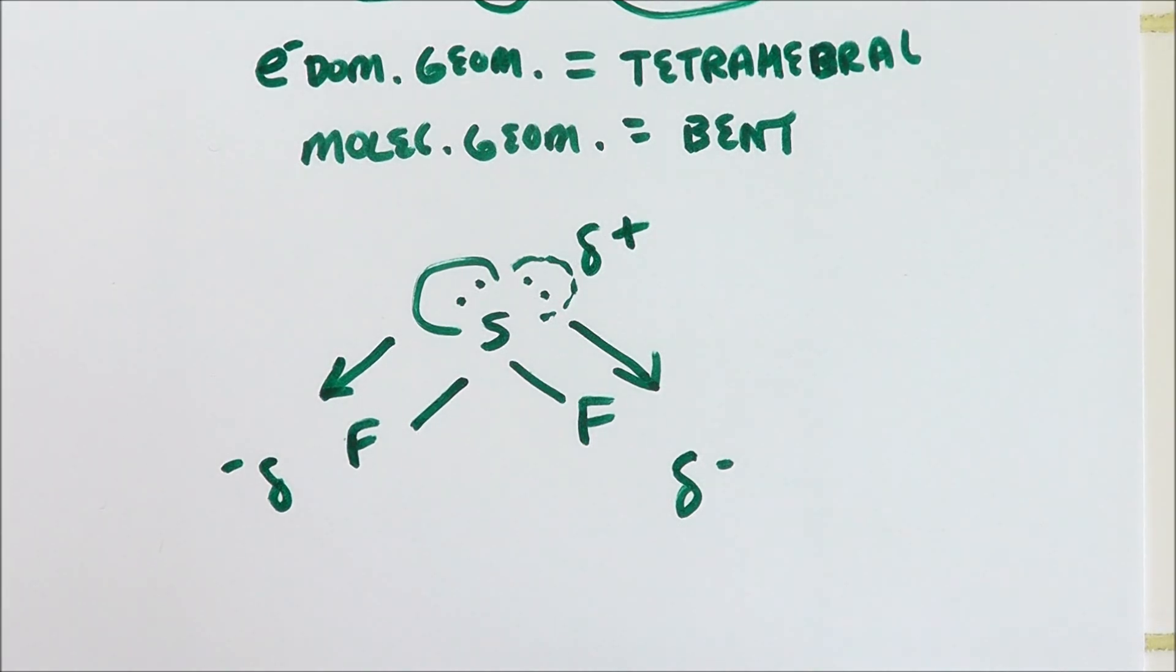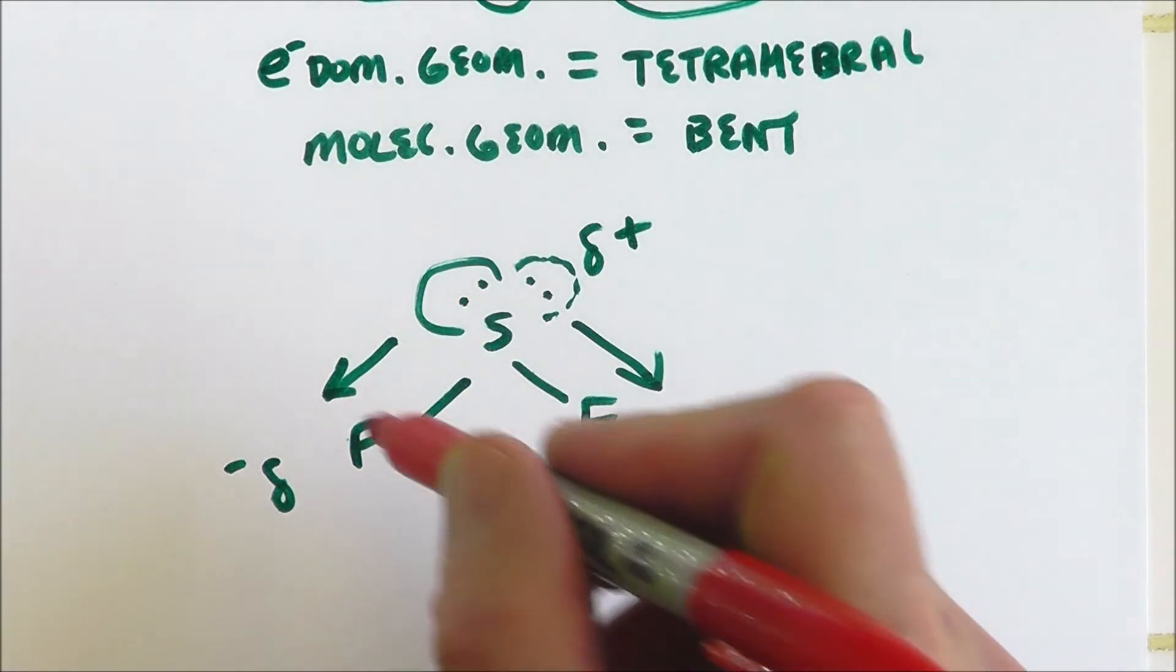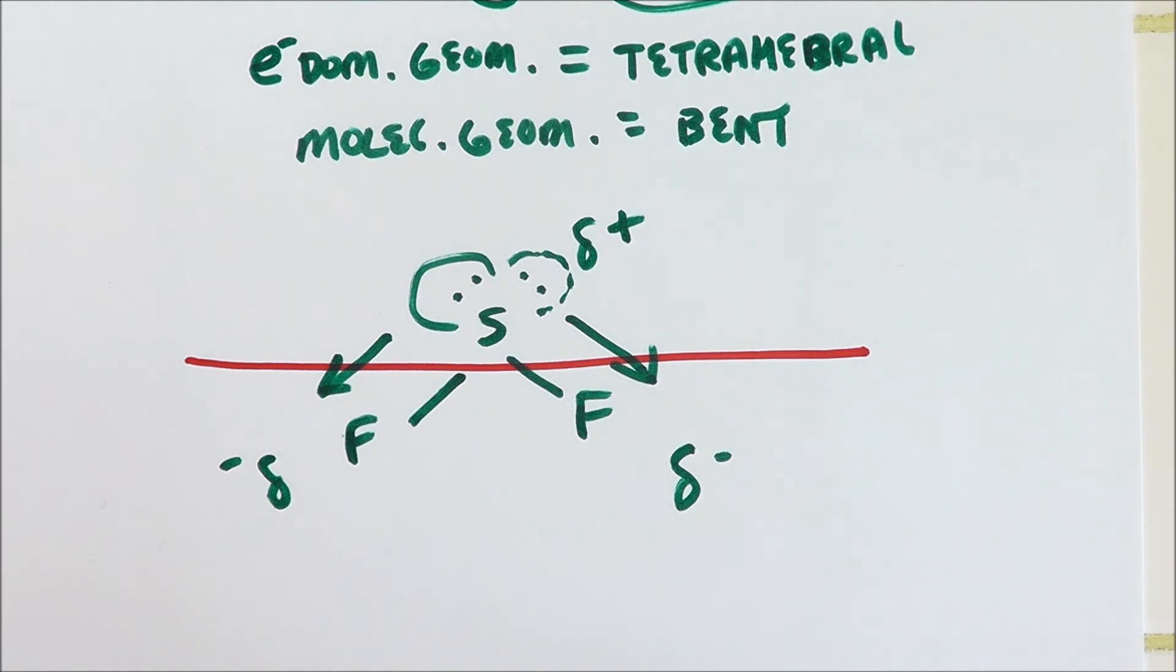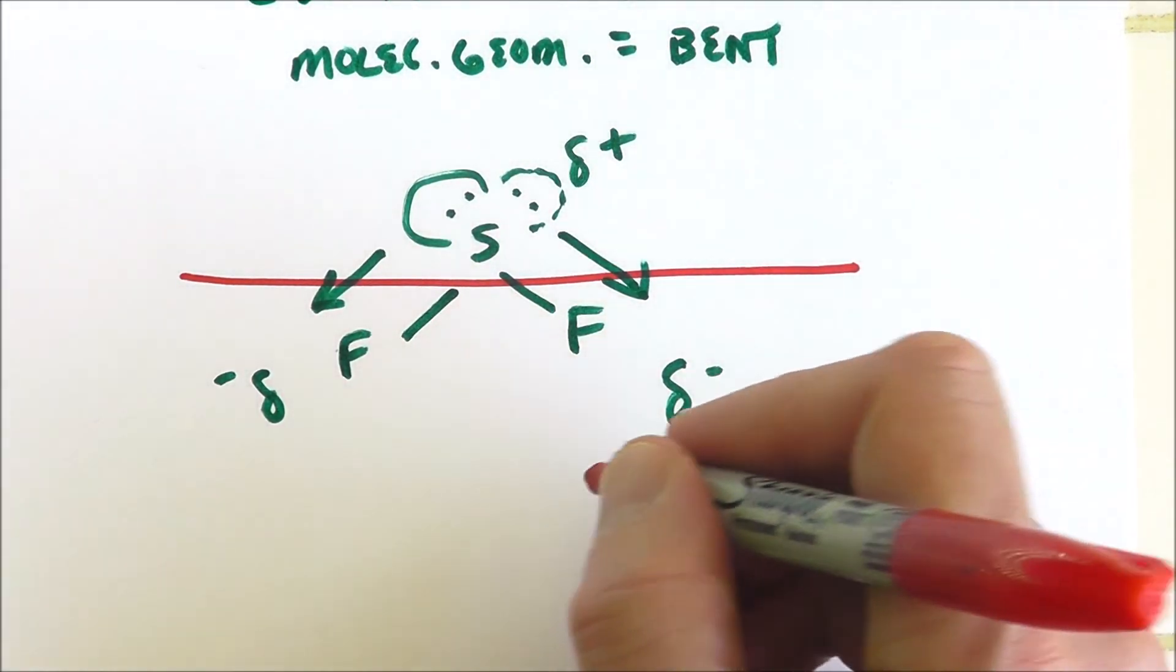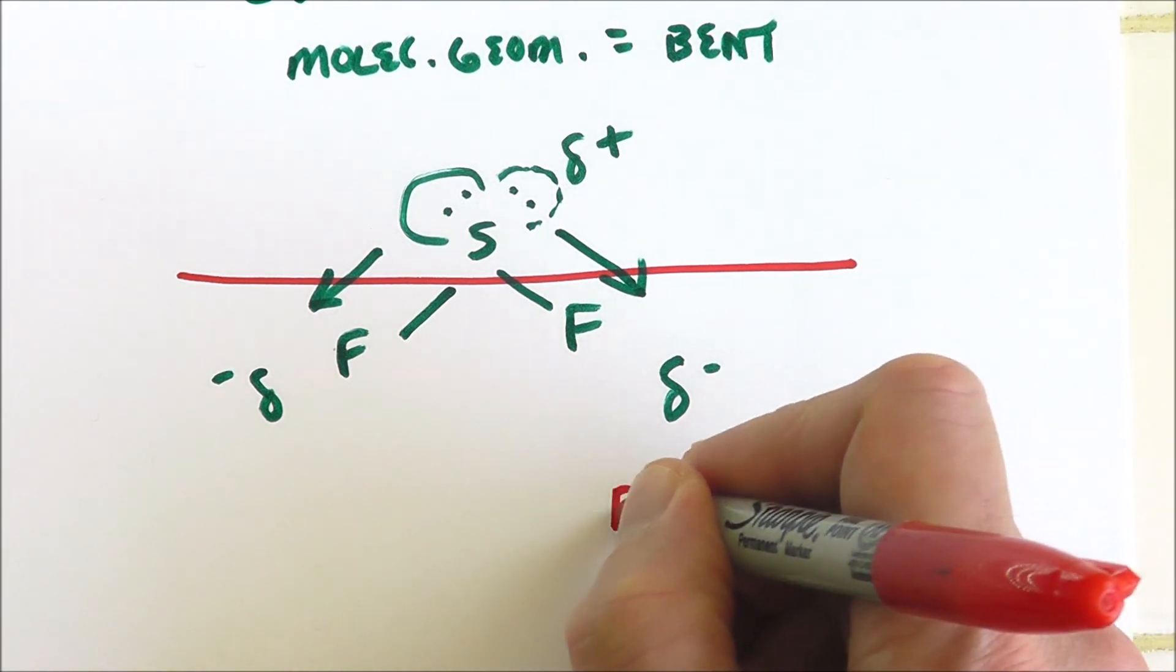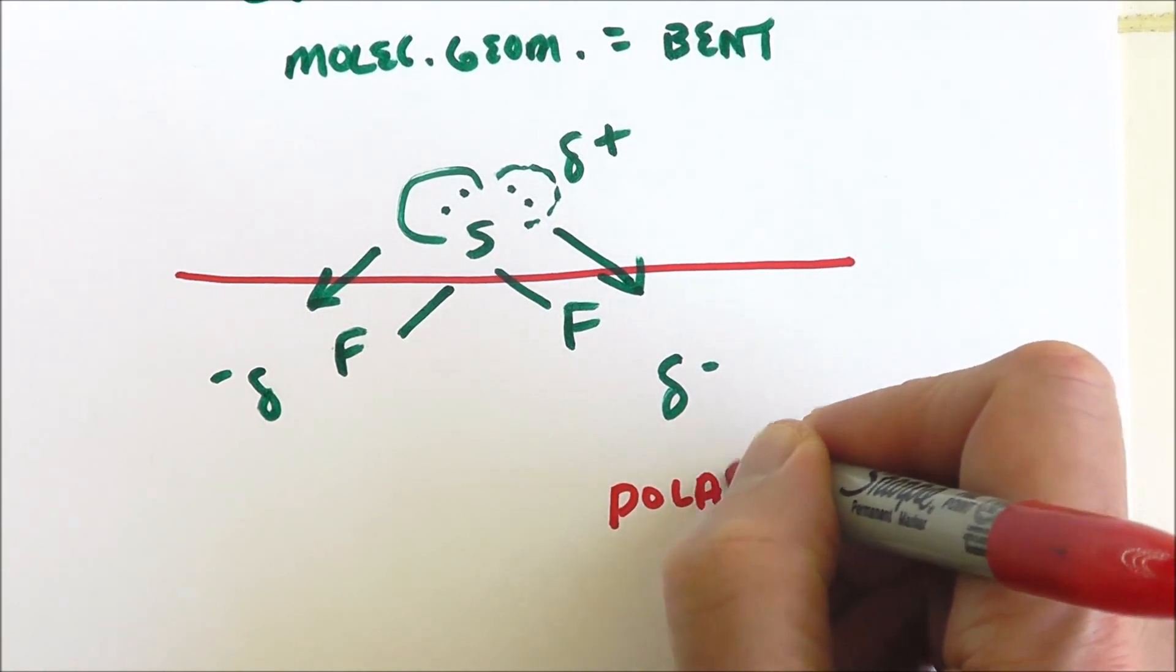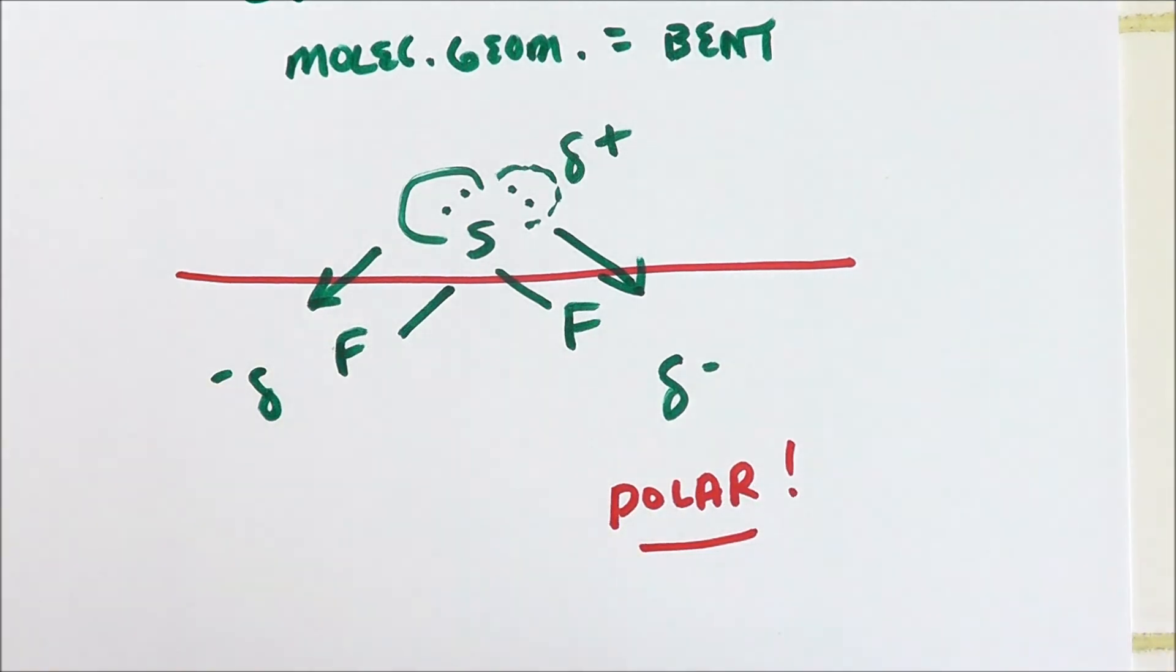Fluorines are going to win the tug of war for electrons. This is going to be the negative side. It's going to be the positive side. Can I bust it in half somewhere and separate positive from negative? Not left to right, but yeah. Up, down. You can. It's got a positive side and a negative side. That's poles that have formed there. And this is a polar molecule. It's kind of an obscure molecule, but still it's polar.